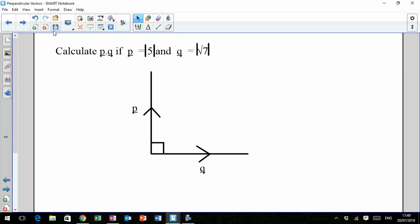So the first thing I'm going to do is give you a wee challenge. You've done this before, so calculate P dot Q if the magnitude of P is 5 and the magnitude of Q is root 7.